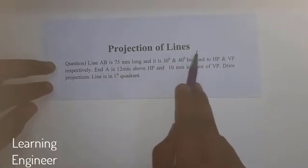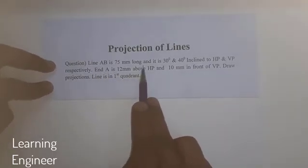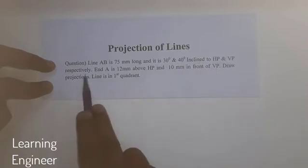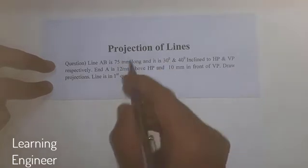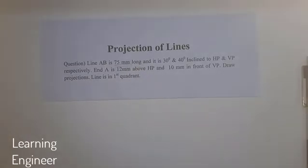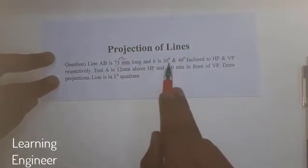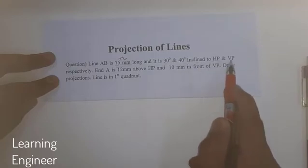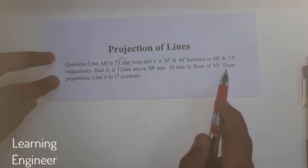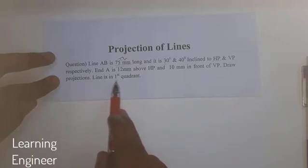I am going to take on projection of line. The question is: the line AB is 75 mm long and it is inclined at 30 degrees to HP and 40 degrees to VP. The true length of line AB has been given. Point A is 12 mm above HP and 10 mm in front of VP. We have to draw the projections; the line is in the first quadrant.